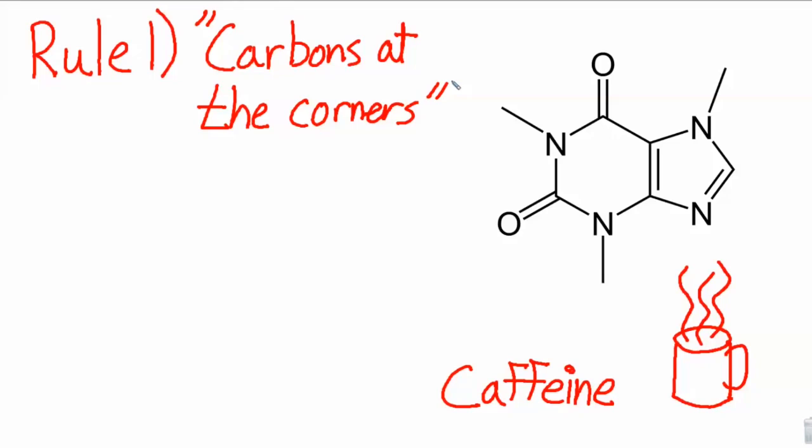Carbons are found at any corner or the end of any line. So, for example, corner, carbon. End of a line, carbon. We can follow that pattern all the way around this molecule. Any place where there is a line that doesn't already have an atom depicted at the end of it, we know there's a carbon. So in this case, we have two, four, six, eight carbons.